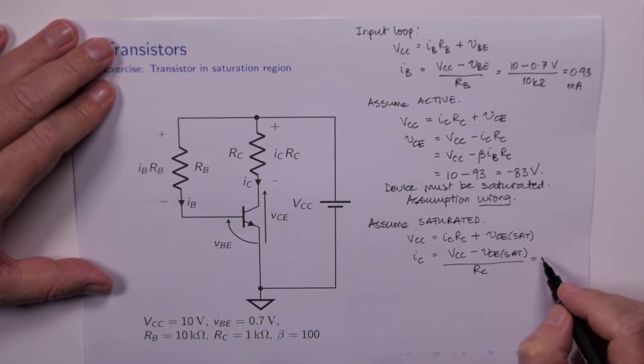It's fixed at 0.2 of a volt. So we can calculate IC to be VCC minus VCE sat divided by RC, which is 10 minus 0.2 volts over RC, which is 1k ohm. And so that is 9.8 milliamps.